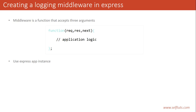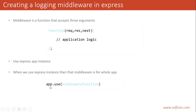All the logic related to that middleware will come inside this function, and here is where you write your application logic. We'll use the express app instance. When we attach a middleware on an express app instance, it is available for the whole app — meaning if I'm attaching a middleware to the express app instance, it will be available for every route. To attach a middleware, we'll use the `app.use` method, which is used to attach middleware to the express app instance.